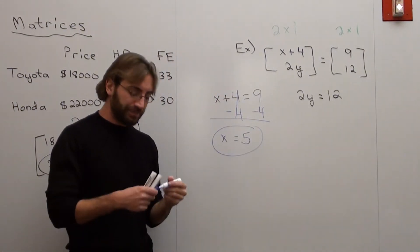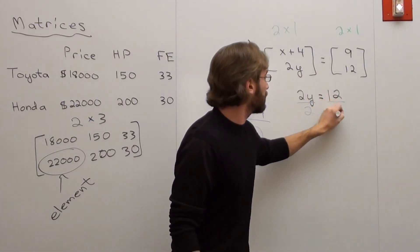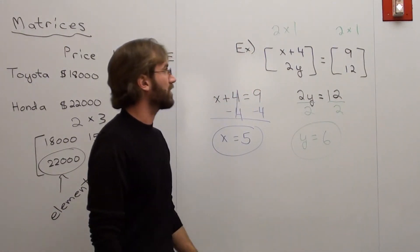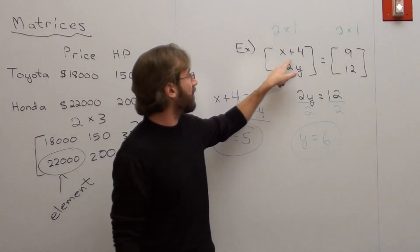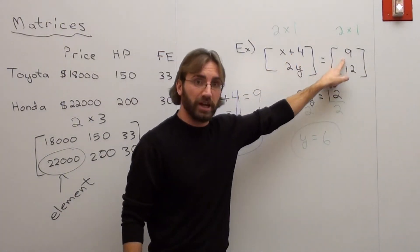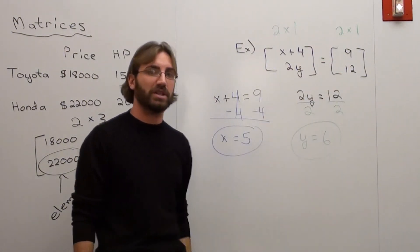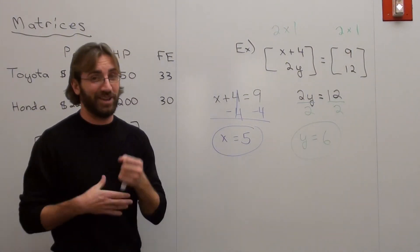x equals five. Y equals six. And if you don't believe me, try it. Substitute this five. What's five plus four? Nine. Nine equals nine. Two times six is twelve. Twelve equals twelve. This matrix is equal to this matrix. That's a good introduction. We're going to start working with operations and see how that goes.